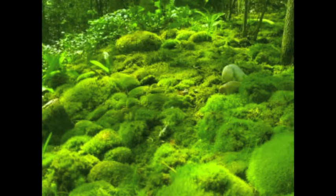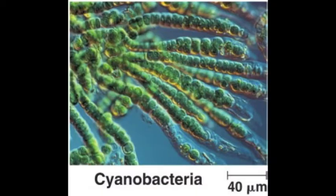Mosses are some of the closest relatives to plant-like protists, as they convey many similar attributes such as structure. Moss lives in and around water as well, just like many plant-like protists. Moss is even autotrophic, just like many protists. Cyanobacteria is another very close relative to protists, as they have the ability to carry out photosynthesis, just like many plant-like protists.